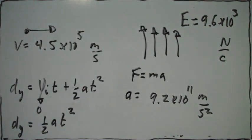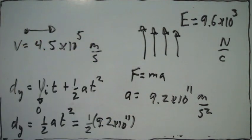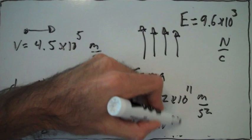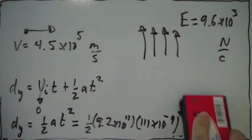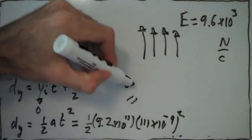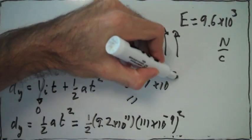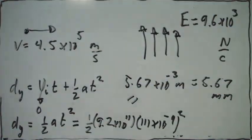So now we can plug this into the formula for displacement, because we also know the time. We already calculated the time was 111 nanoseconds. So the total displacement in the y direction is given by plugging in the acceleration and the time. Working this out, we find that in the time the proton moved 5 centimeters horizontally, it moved 5.67 millimeters vertically.